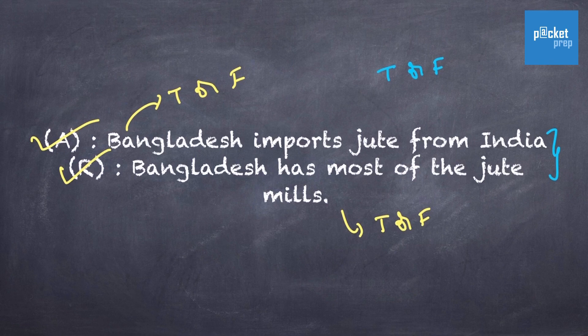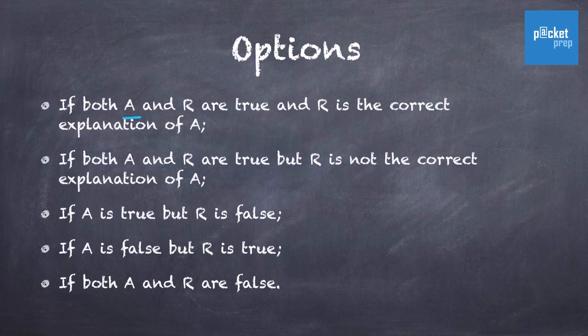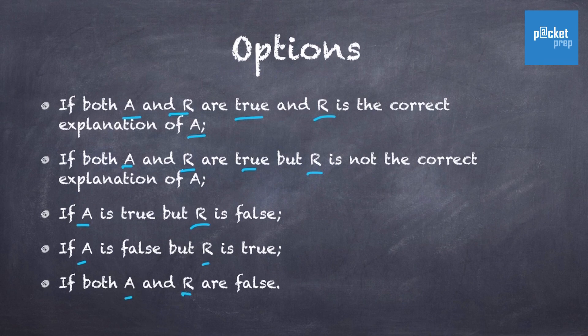It might be physics, chemistry, biology, geography, social, and many different domains. Another tip is to understand the options clearly. The options would be given as such: Option 1 - if both A and R are true and R is the correct explanation of A. Option 2 - if both A and R are true but R is not the correct explanation of A. Option 3 - if A is true but R is false. Option 4 - if A is false but R is true. Option 5 - if both A and R are false.